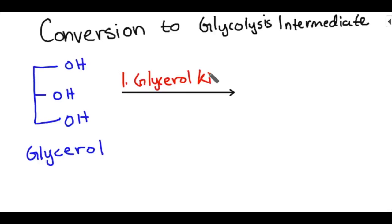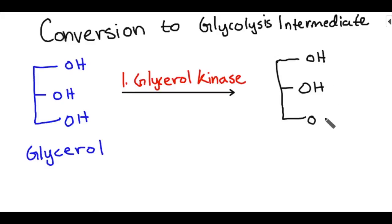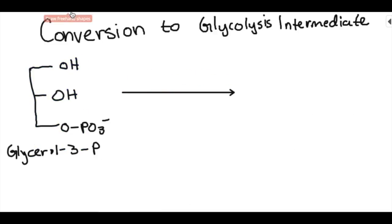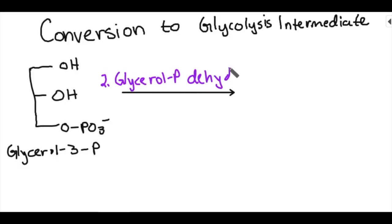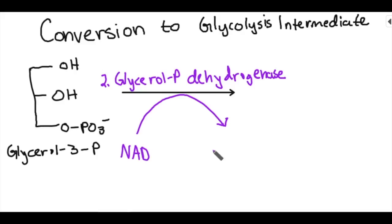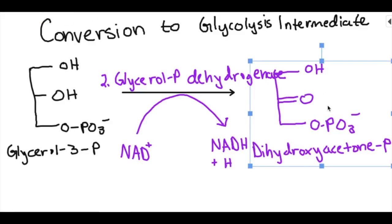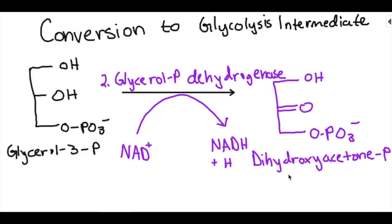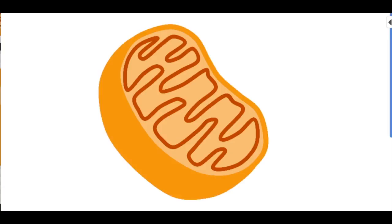The first step is glycerol reacting with glycerol kinase. Kinases use ATP and donate a phosphate group — here the phosphate gets donated to the third carbon, giving you glycerol-3-phosphate. The second step uses glycerol phosphate dehydrogenase, which uses NAD+ and reduces it to NADH, oxidizing the second carbon to give you the product DHAP, dihydroxyacetone phosphate.